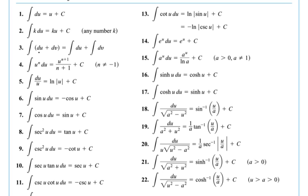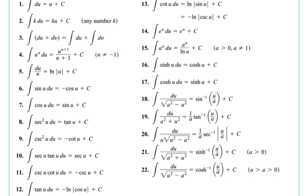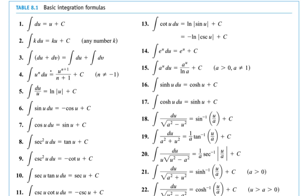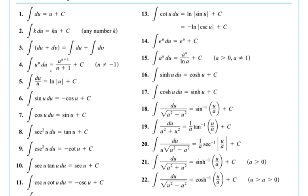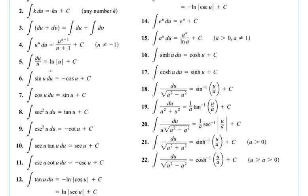Some of the very basic ones: integral of du is equal to u, or number 2, which is k times u. Number 4 and 5 are our power rule integrals. Number 5 is a special case when n equals negative 1. We see our trigonometric integrals through 6, 7, 8, 9, 10, 11, and 12. We get our transcendental ones like number 14. We have the hyperbolic functions 16, 17, and through 18 through 22 are trigonometric integrals.